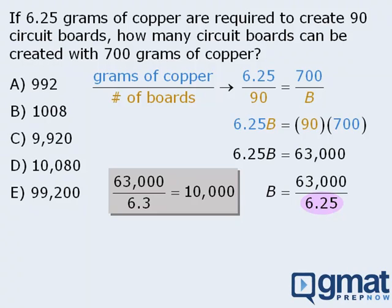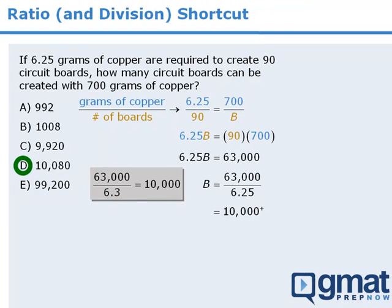More importantly, since 6.25 is a little bit less than 6.3, it will divide into 63,000 a bit more than 10,000 times. In other words, 63,000 divided by 6.25 will equal a value that's a little bit bigger than 10,000, which we'll denote as follows. So the correct answer here is D, since it's a little bit bigger than 10,000.